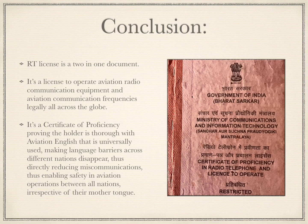Conclusion: RT license is a two-in-one document. It's a license to operate aviation radio communication equipment and aviation communication frequencies legally all across the globe. It's a certificate of proficiency proving the holder is thorough with aviation English that is universally used, making language barriers across different nations disappear, thus directly reducing miscommunications and enabling safety in aviation operations between all nations irrespective of their mother tongue.